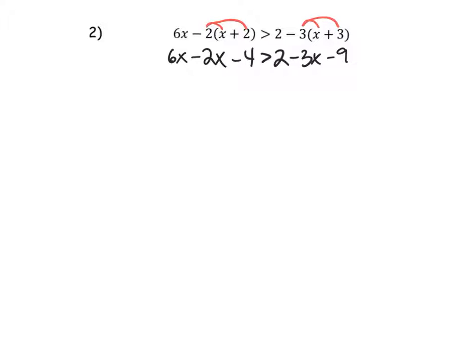Perfect. Lots of like terms. Right here, 6x take away 2x, put those together. I have 6 take away 2, that's 4x. Over on the right-hand side, 2 minus 9, 2 and negative 9. Sorry, let me do that. Okay, negative 7. 2 minus 9 minus 3x.